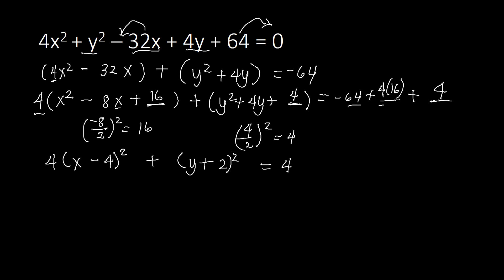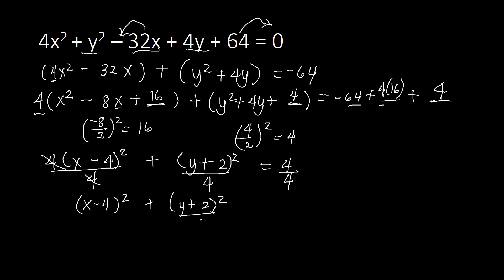We're not yet done because for the standard form of an ellipse, the right side must equal 1. Since we have 4 on the right side, we divide both sides by 4. Simplifying, we get (x minus 4) squared over 4 plus (y plus 2) squared over 4, equal to 1. This is now the standard equation of our ellipse.